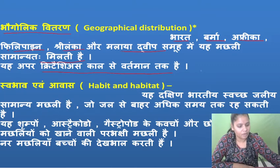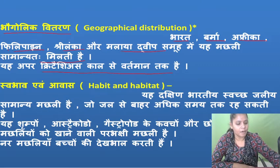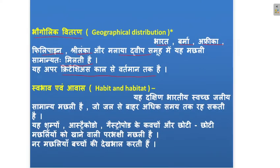Now let us look at the behavior and habitat of Anabas. It is a common fish found in south regions and freshwater habitats. This fish has a remarkable ability to survive outside of water for a long time. It feeds on gastropod shells and small fish, taking them as food.